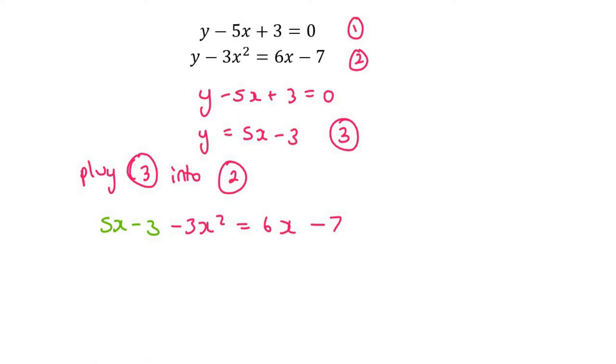Step 1 was to get y alone, so I took this equation and I wrote it over here again, and then I just rearranged it a little bit to get the y completely alone. I then took that expression, and it says that y is equal to 5x minus 3, and so I replaced this y with 5x minus 3, and that's what we can see over here. Everything else is the same.